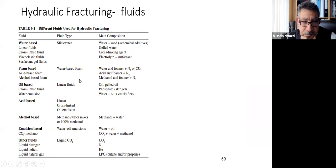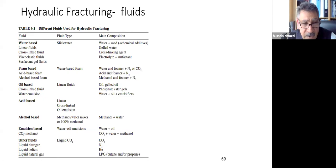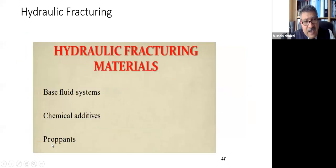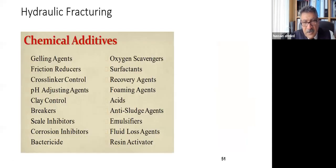Fracturing fluid types: water-based is the most common. Also used are foam, acid, oil-based (not preferred due to cost and environmental issues), alcohol (methanol used quite a lot mixed with water as a solvent). Summary of what you need: fluid, additives, proppant, tanks, pumps, and recorders. Chemical additives each have a set purpose.